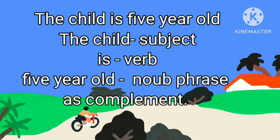Our next example is: 'The child is 5 years old.' Here, '5 years old' is a noun phrase. It is the complement of the sentence. Because it comes after the be-form of the verb 'is,' completes the meaning, and acts as a noun. So, it is the complement.